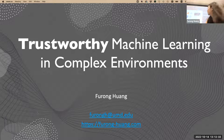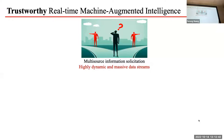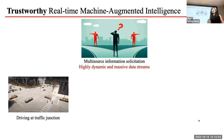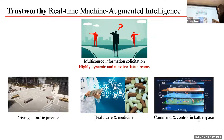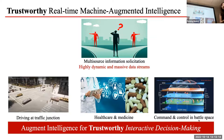Today I wanted to talk about trust diversity in machine learning in complex environments. We live in a world of information deluge. Even the smartest of us can find ourselves overwhelmed by highly dynamic and massive data streams we have to keep up with in order to make informed decisions — whether it's driving at a busy traffic junction, decision making in healthcare and medicine, or in an extreme case, command and control in a multi-domain modern battle space. There is an urgent need to develop machine learning algorithms to augment intelligence for trustworthy interactive decision making.